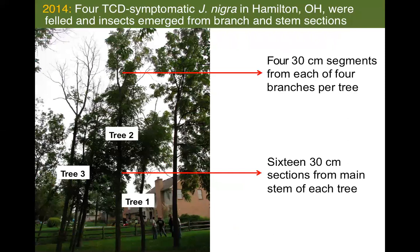To answer some of these questions, we went to an area where there are TCD symptomatic trees — Hamilton, Ohio, in a gentleman named Bill Burnett's backyard, which has primarily walnut and some ash. From these trees, we felled four trees and took four 30-centimeter sections from four branches per tree and also 16 30-centimeter sections of the main stem. We split these samples: half the stem samples were reared for beetles, the other half Jenny Juzwick and others peeled the bark off and looked for cankers, including Geosmithia morbida.